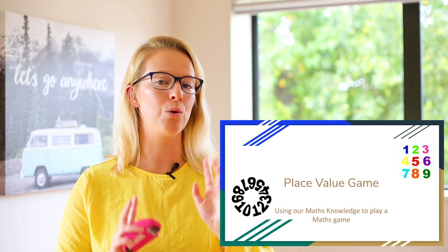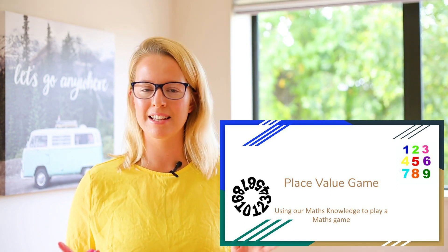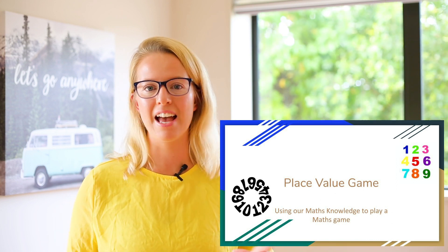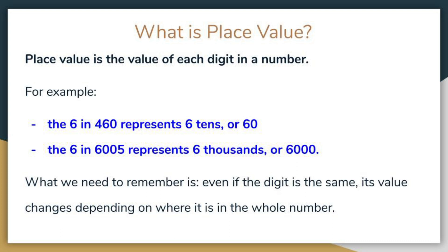We are playing a place value column game, or a grid game. As a bit of a refresher, let's go over what place value is. Some of you might be thinking 'I've got this, this is easy,' but it's always good even as adults to have refreshers. Place value is the value of each digit in a number. For example, the six in four hundred and sixty represents six tens, or sixty. The six in six thousand and five represents six thousands, or six thousand. We need to remember that even if the digit is the same, its value changes depending on where it is in the whole number.